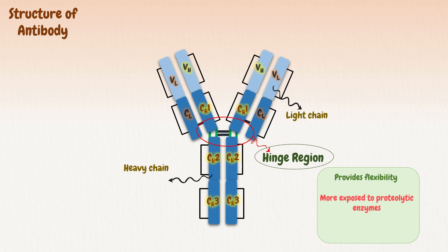The hinge region is also more exposed to proteolytic enzymes because of the presence of prolines. So this was all about the structure of the antibody. Now let's learn about its classes in the next section.